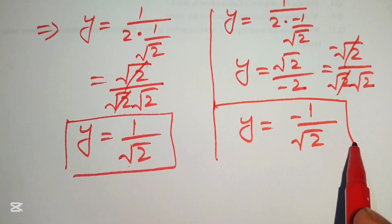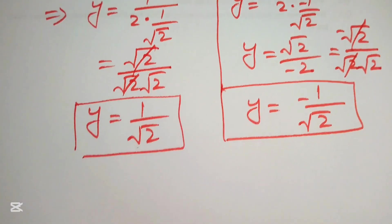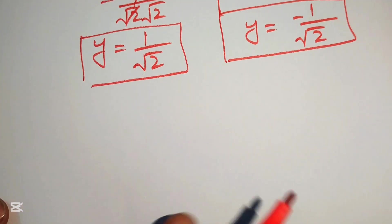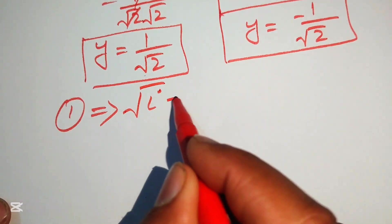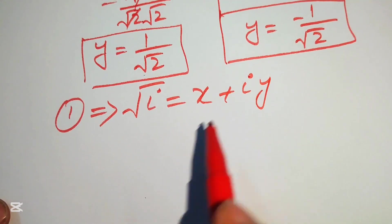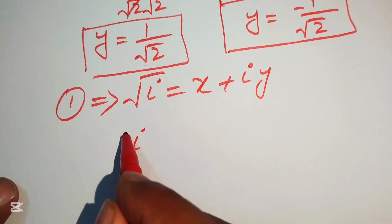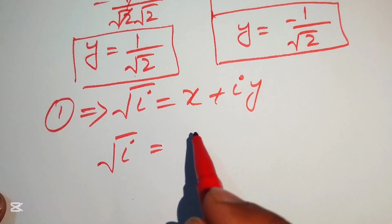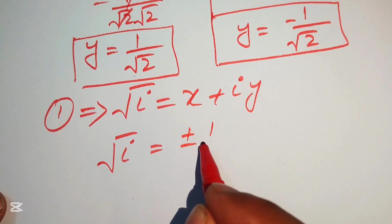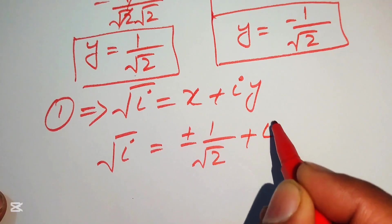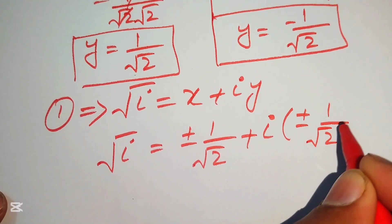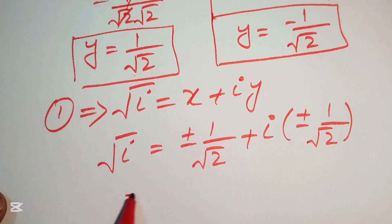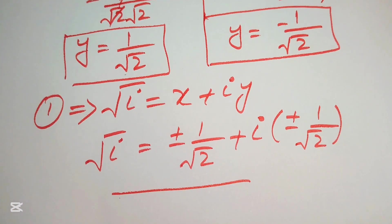Finally, substituting into equation one, √i = x + iy, the answer is √i = ±(1/√2 + i·1/√2). Thank you so much for watching this video. Please subscribe to my channel for more exciting videos.